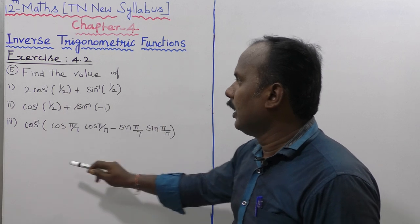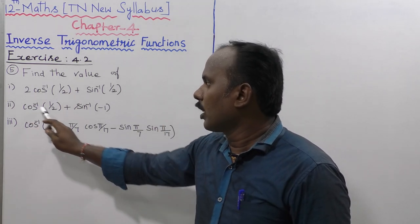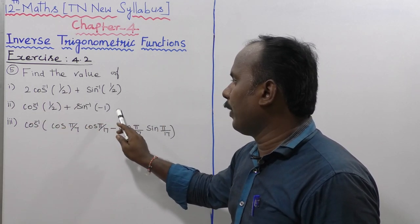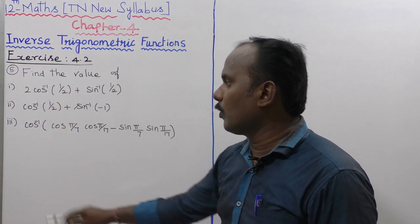The first subdivision. Second one: cos inverse of 1 by 2 plus sin inverse of minus 1. That is the second subdivision.